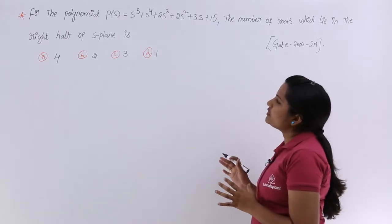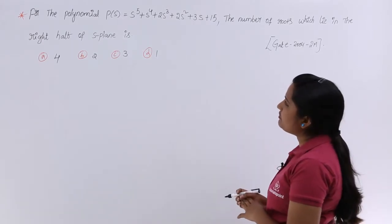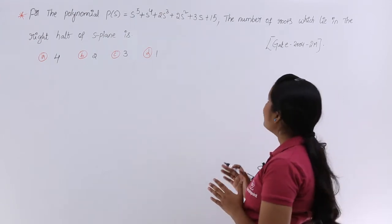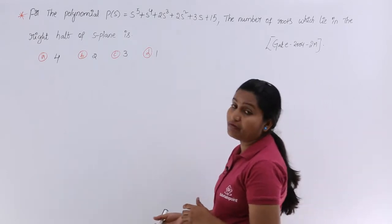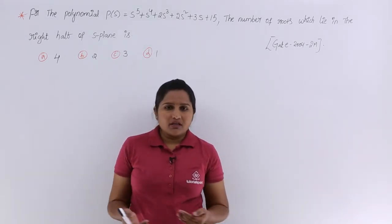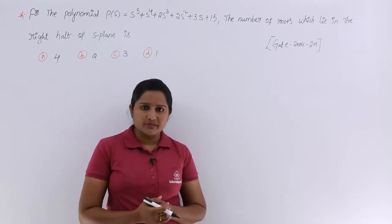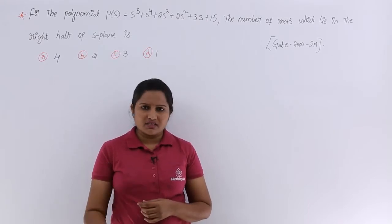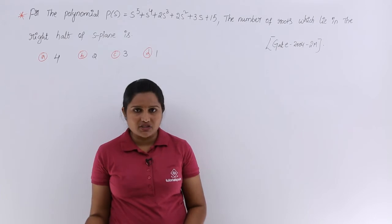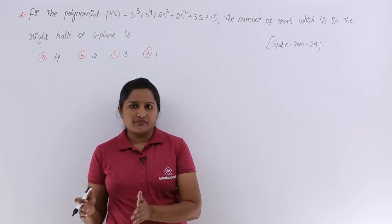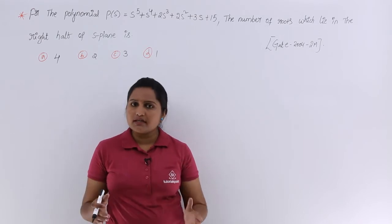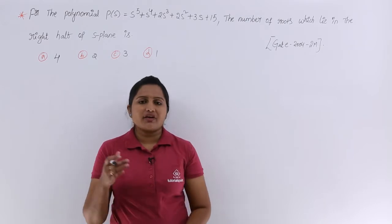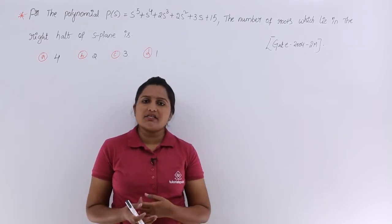The polynomial P(s) = s⁵ + s⁴ + 2s³ + 2s² + 3s + 15. The question asks for the number of roots which lie in the right half of the S-plane. The meaning of roots lying in the right half of the S-plane is that the system is unstable. Indirectly they are asking whether the system is stable or not, and if unstable, how many roots cause that instability — that is, how many roots are in the right half of the S-plane.